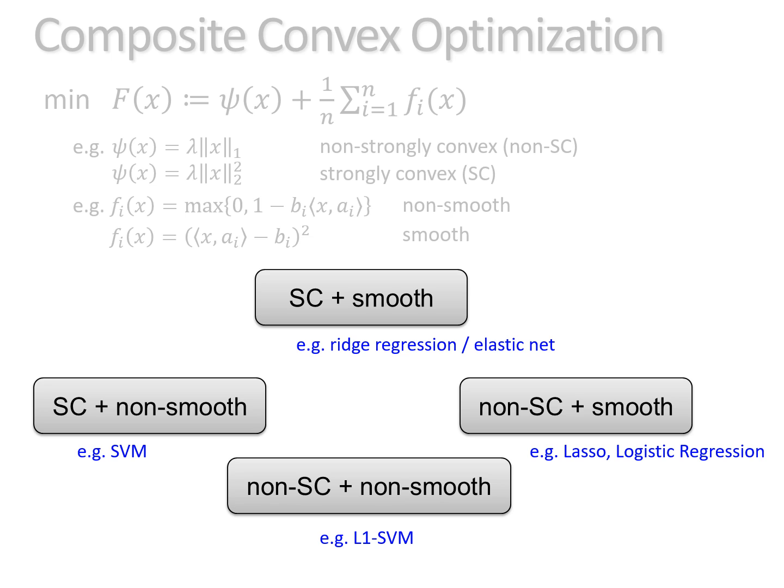At the same time, if we look at existing algorithms, there are really a lot of them, like SVRG, Pegasus, SDCA, SAGA. Each of them solves only one of the four classes of the problems.